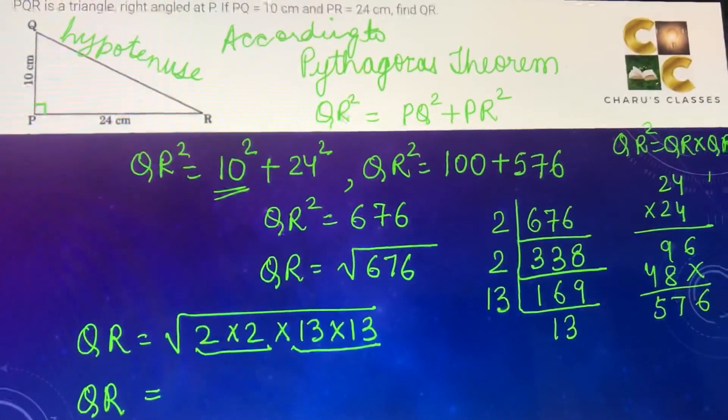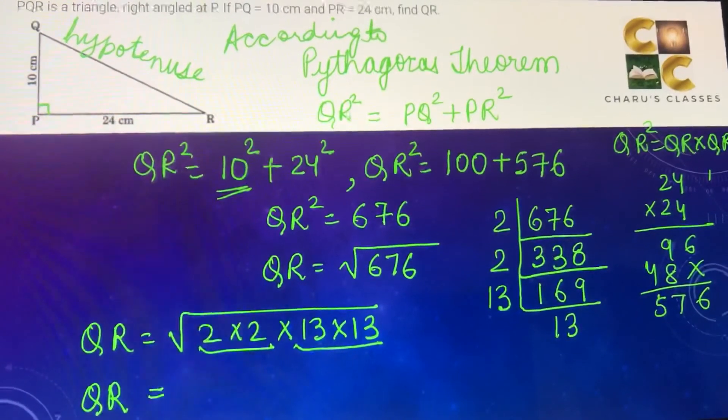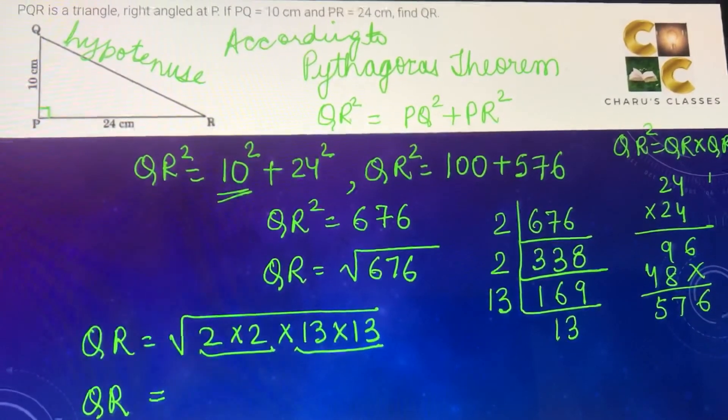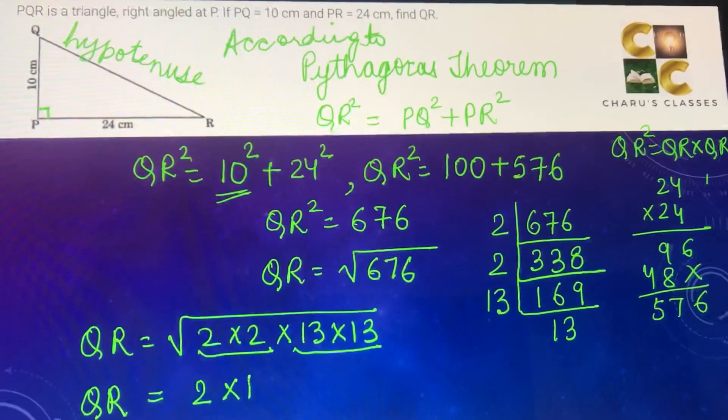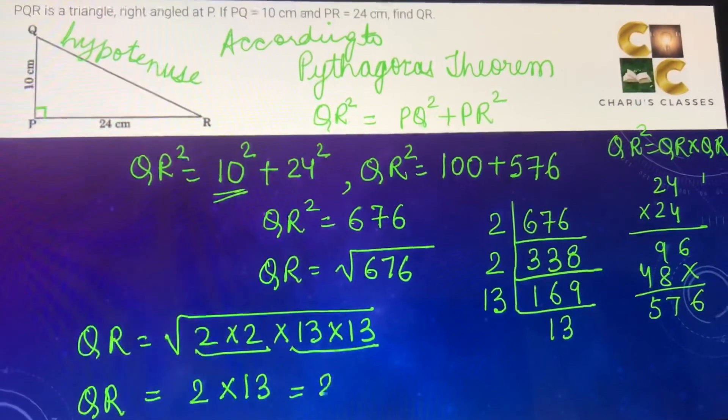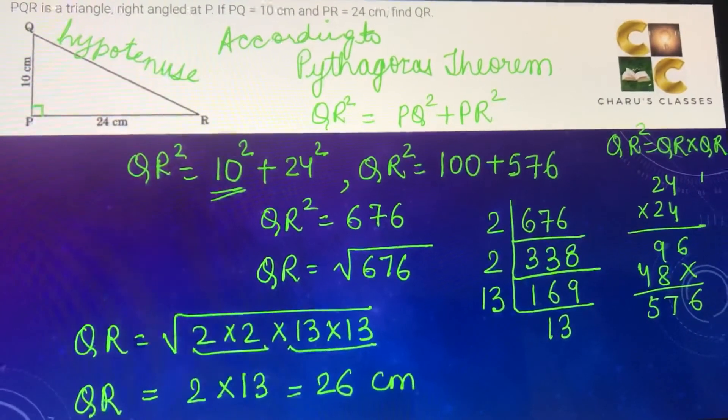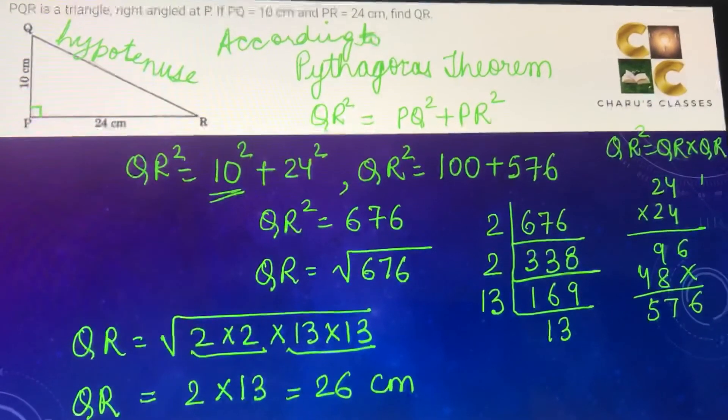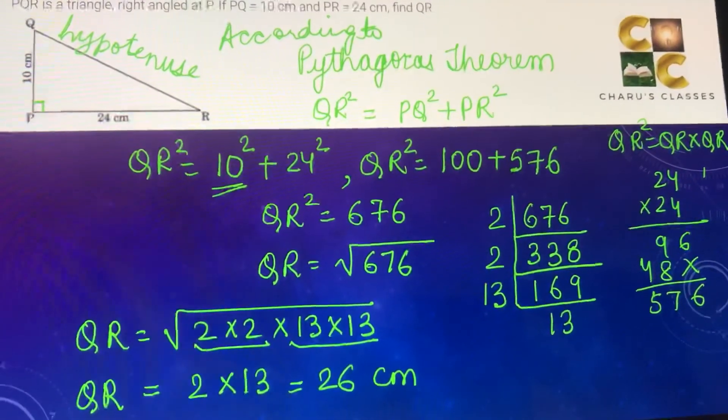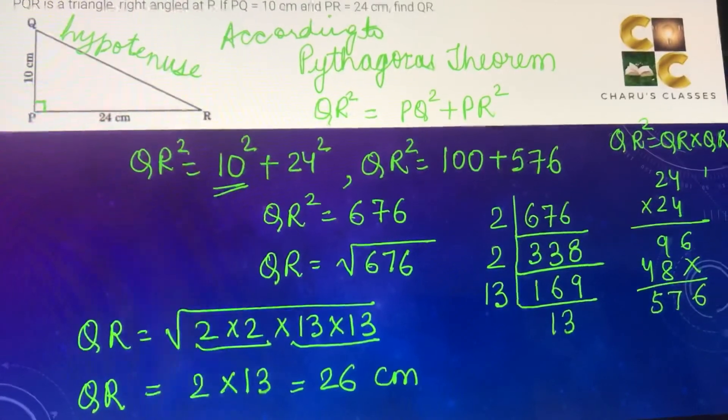So this will be 2 into 13 and that is equal to 26 cm. So the hypotenuse or QR is equal to 26 cm.